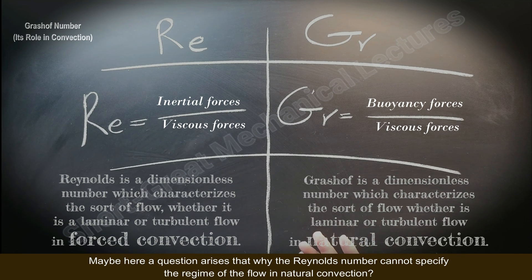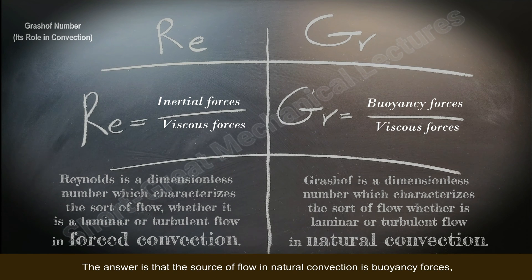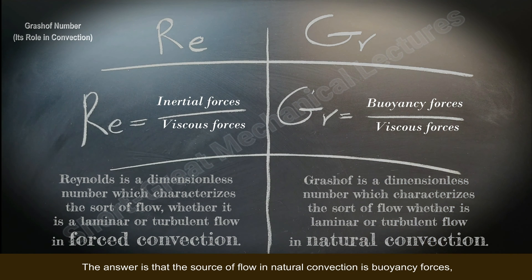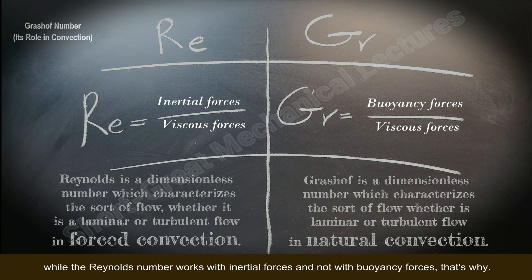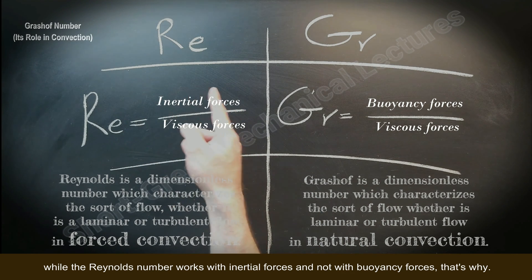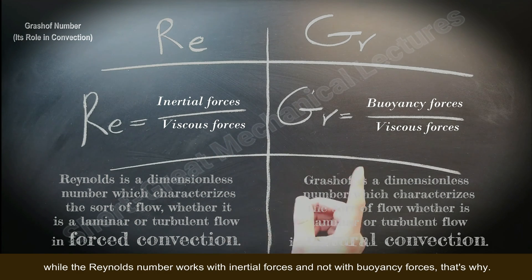A question may arise: why can't the Reynolds number specify the flow regime in natural convection? The answer is that the source of flow in natural convection is buoyancy forces, while the Reynolds number works with inertial forces, not buoyancy forces. That is why Reynolds is not applicable for characterizing natural convection.